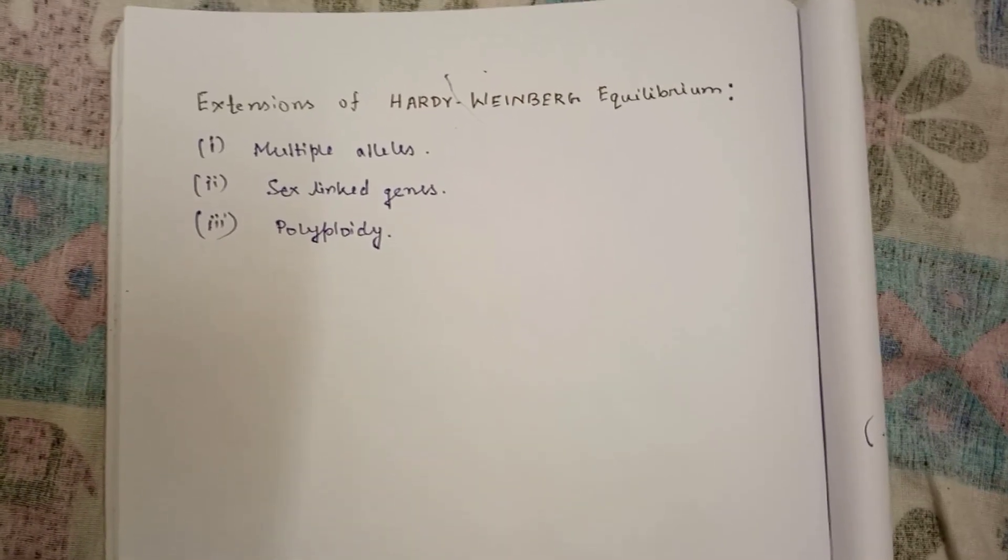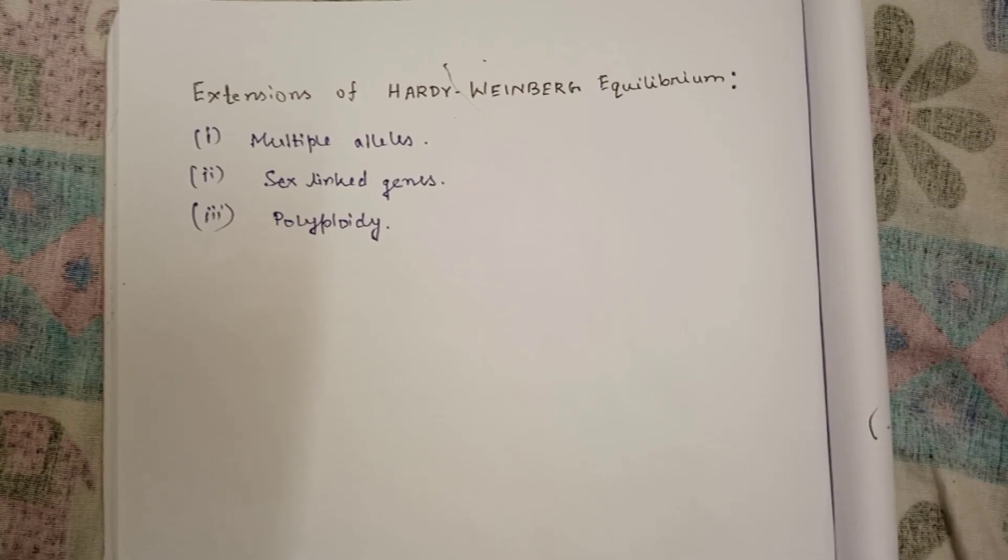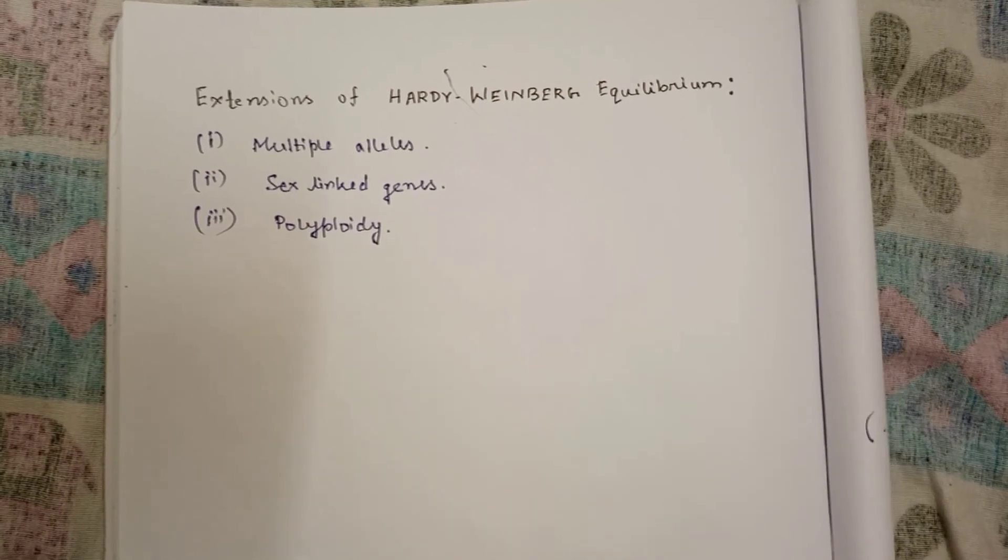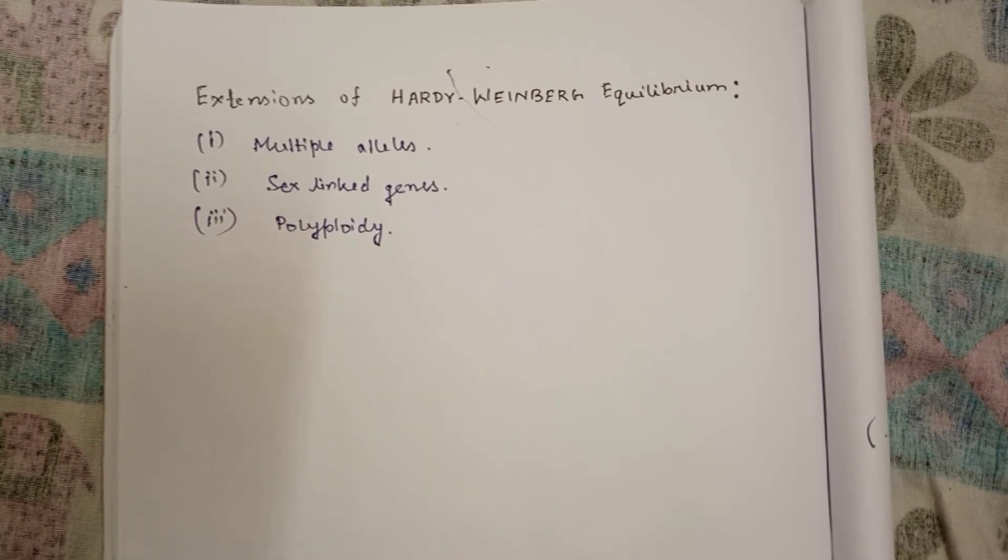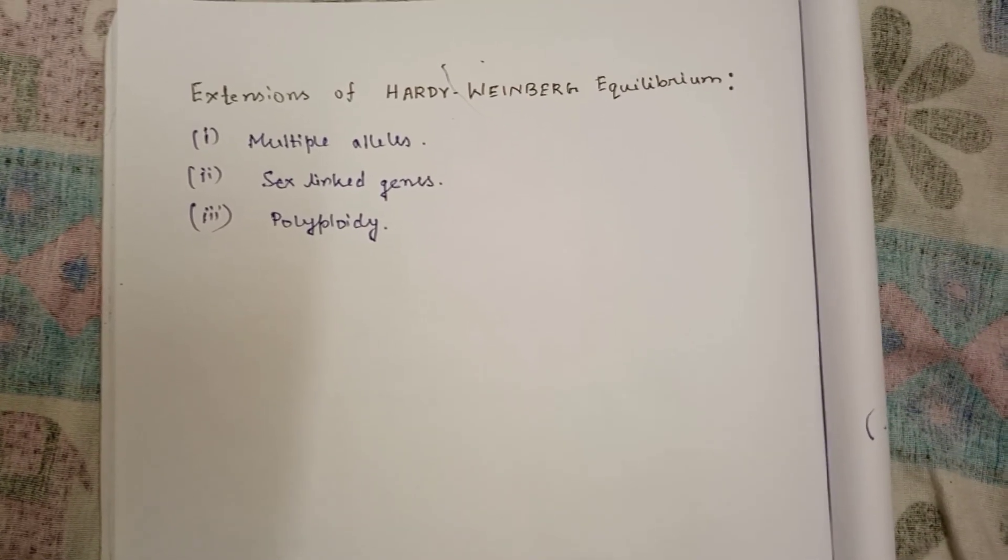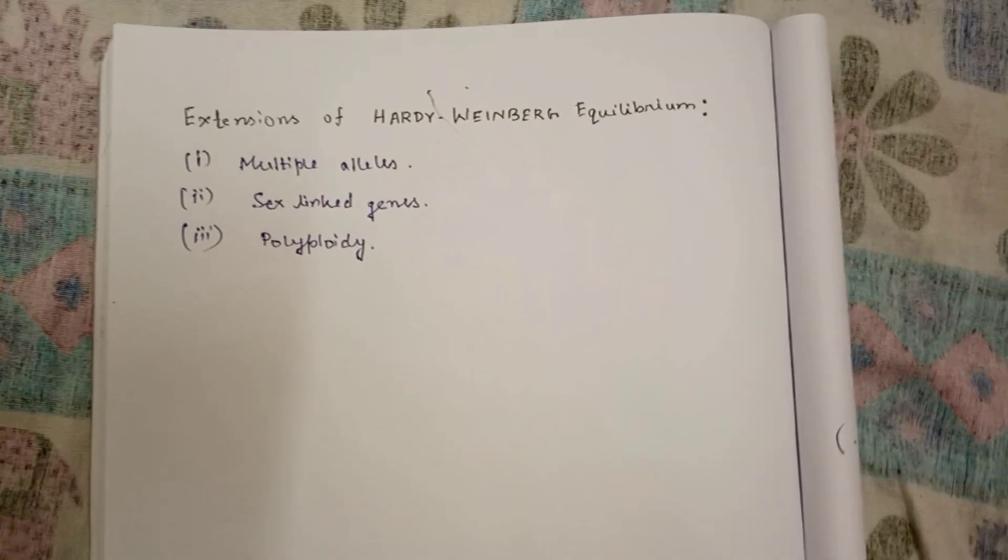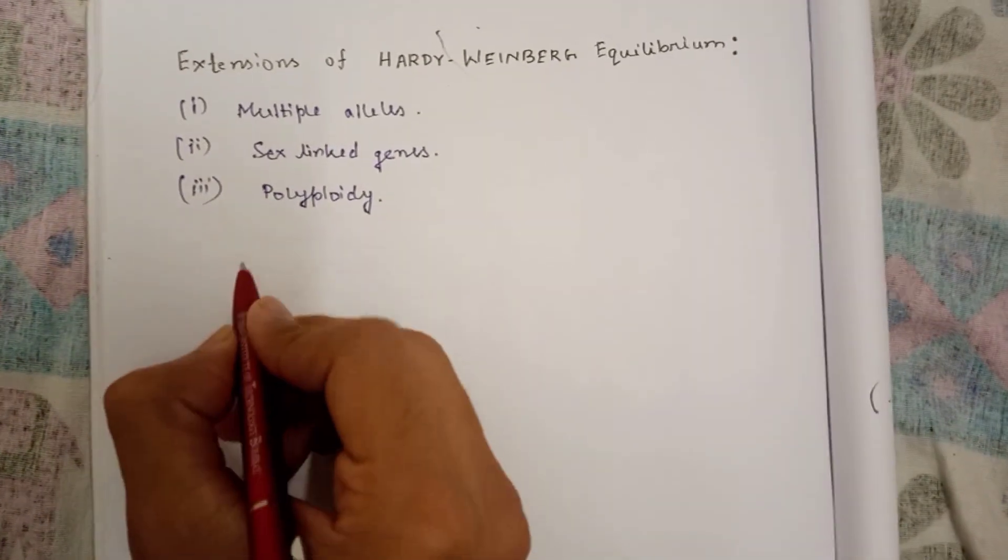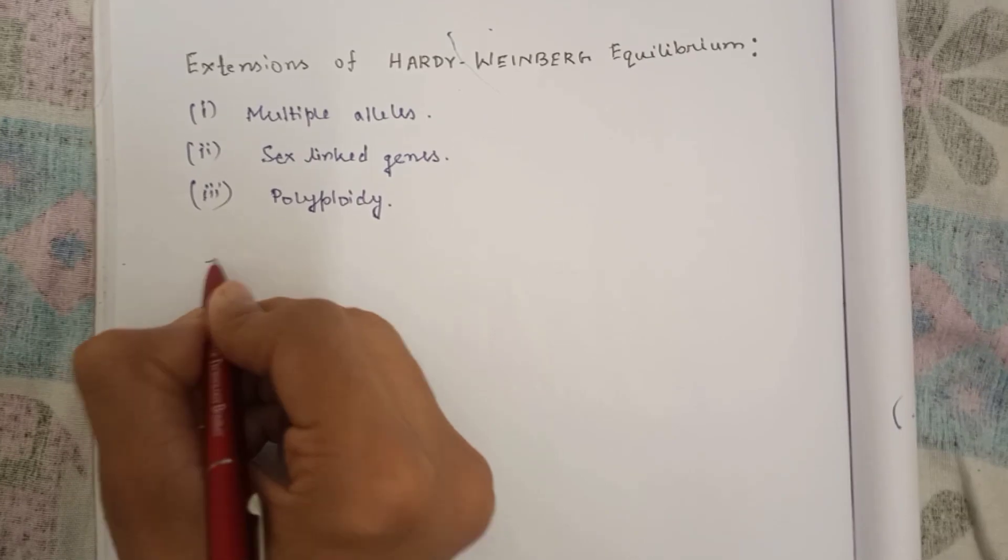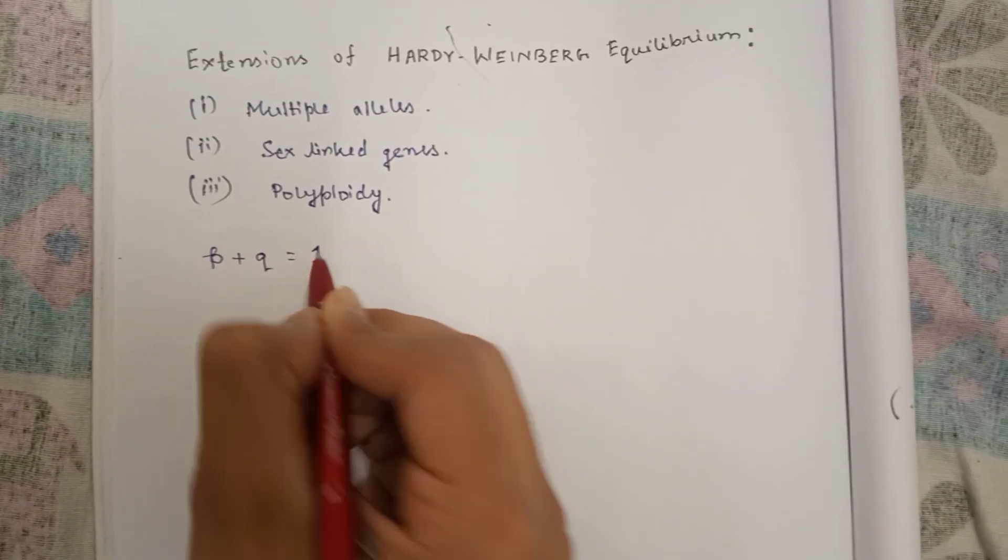Hello friends, today we will learn about the extensions of Hardy-Weinberg equilibrium. If you have not watched my Hardy-Weinberg equilibrium videos, you can check in the description box. In short, you may remember that p plus q equal to one, that is allele frequency.